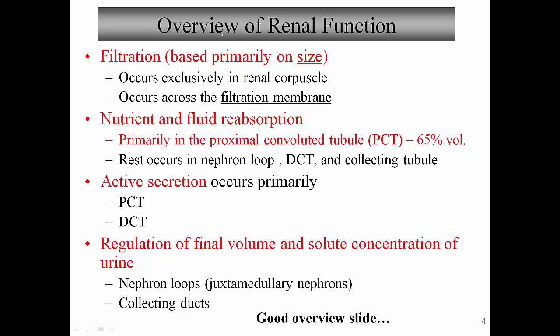This overview slide covers a couple of key points. Filtration is the first process — this creates the raw material that will be processed into urine. Filtration is based primarily, but not entirely, on size; there is also an electrical charge component. This occurs in the renal corpuscle — the combination of the glomerular capsule plus the glomerular capillaries — across the three-step filtration membrane: the fenestrated capillaries, the basement membrane, and the filtration slits.